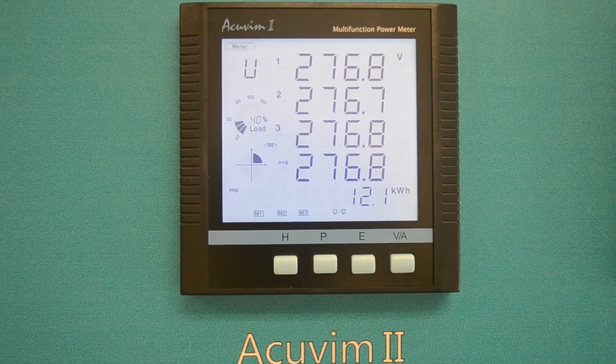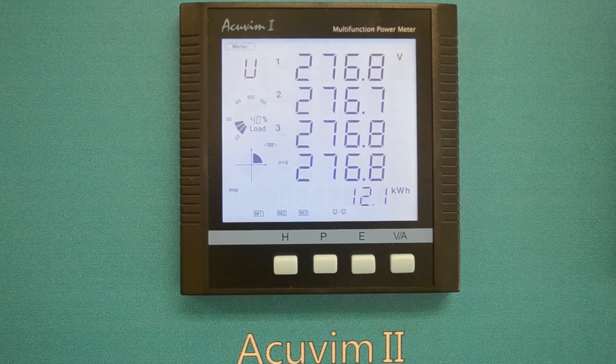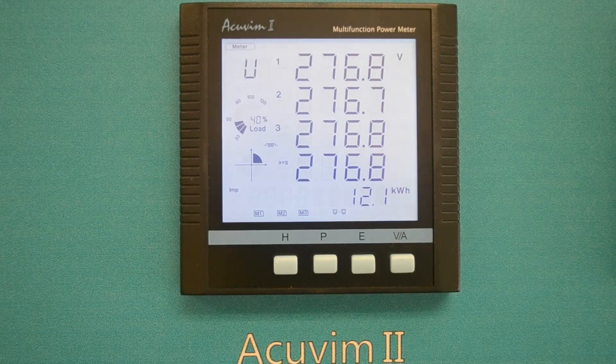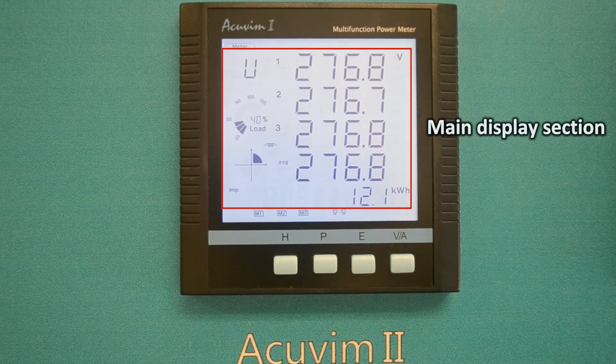First of all, we need to familiarize ourselves with the LCD screen itself. The screen is divided into three display sections which are mode display, main display, and indicator display.